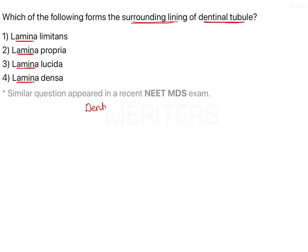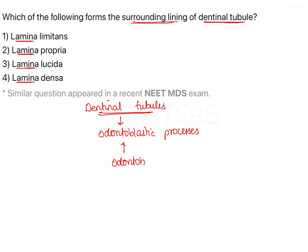Let's begin with dentinal tubules. Dentinal tubules are structures present within the dentin which consist of the odontoblastic processes — cytoplasmic extensions of the odontoblasts. Odontoblasts are dentin-secreting cells whose cell body is present within the pulp, forming the outermost layer of the pulp known as the odontoblast zone. The odontoblastic processes extend into the dentin, running within the dentinal tubules up to the dentino-enamel junction in the crown and the dentino-cemental junction in the root.